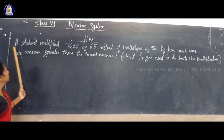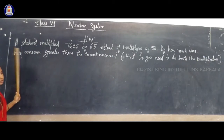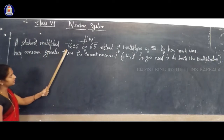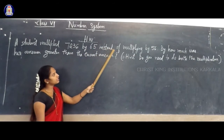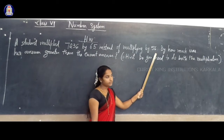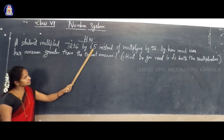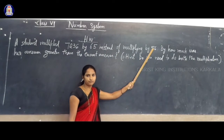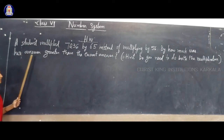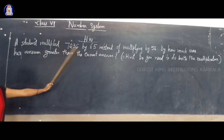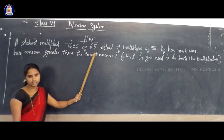The next question — this is the former question. How to solve this? I will give the hint. A student multiplied 7236 by 65 instead of multiplying by 56. By how much was his answer greater than the correct answer?